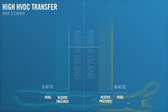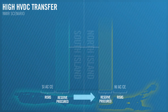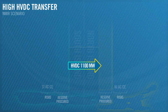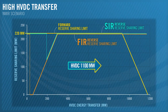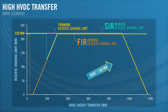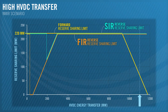Let's look at a scenario where the DC energy transfer is high. The HVDC is set to transfer north at 1100 megawatts. Let's see the effect it has on the forward and reverse reserve sharing limits. The reverse reserve sharing limit is still 220 megawatts, but the forward reserve sharing limit has lowered to 70 megawatts.